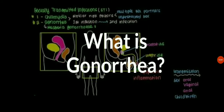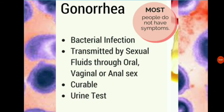Gonorrhea is a common sexually transmitted disease caused by a bacterial infection transmitted through oral, vaginal, or anal sex. It is diagnosed by urine test. It is caused by bacteria that live in warm, moist areas of the body. This bacteria attacks the mucous membranes of the penis, vagina, or lining of the throat, and is spread to another person through direct sexual contact.